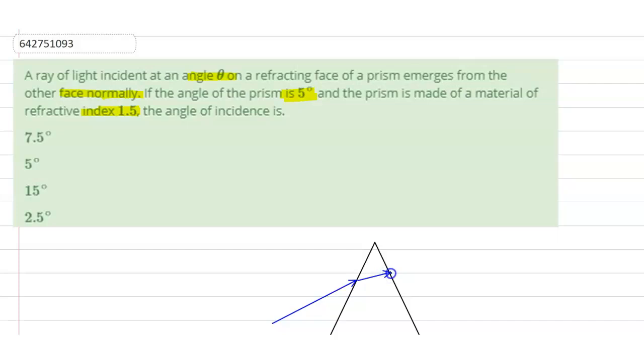and it moves out normally from here - it emerges out normally from this surface, from the face of the prism. Let's make the normal for this face of this prism. The normal for this face would look like this.